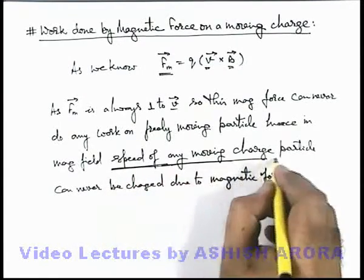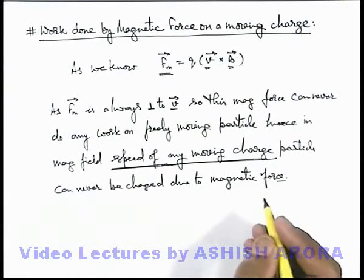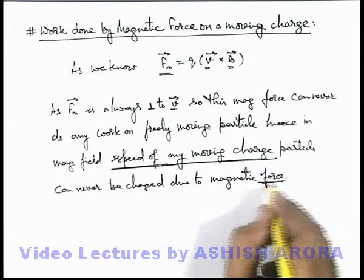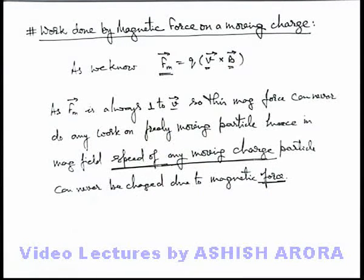The speed of any moving charge particle in a magnetic field can never change due to magnetic force. So just remember the fact that the work done by magnetic force is always equal to zero.